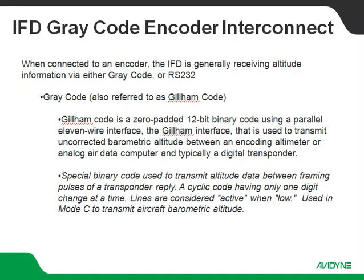Before we jump in, I want to discuss a little bit about what gray code is for some of the younger folks that may not be accustomed to it. You may also hear it referred to as Gillham code. Gray code or Gillham code is a zero-padded 12-bit binary code that uses a parallel 11-wire interface. It's just a series of highs and lows — ones and zeros — that equates to some barometric pressure altitude that systems can receive on that bus.